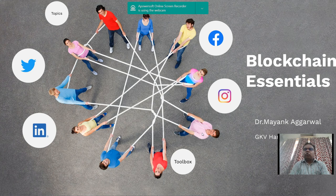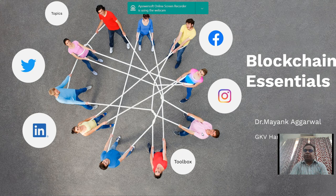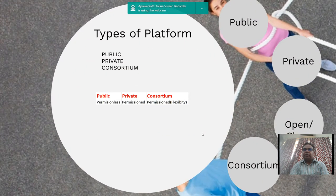Let us continue with our course on blockchain. In this unit one, week one course, we have talked about the definition of blockchain, the basics of blockchain, and seen three different types of blockchain networks: centralized, decentralized, and distributed. Today we will focus on different types of blockchain platforms.